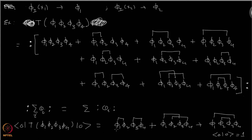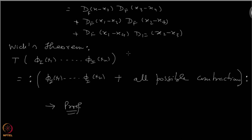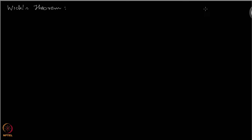So you have all four fields and the terms involving contractions. We will prove this in general, and the proof will be through induction. For ease of notation, I will drop writing φ(xᵢ) and instead write φᵢ, so φ(x₁) becomes φ₁ and so forth. The theorem we want to prove is that the time-ordered product of n fields equals the normal-ordered product of those fields.